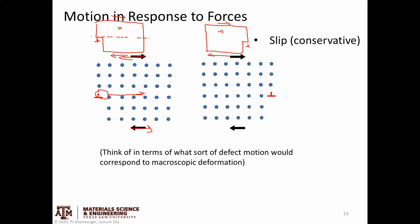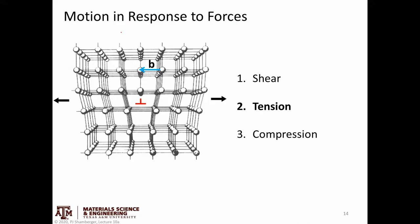Similarly, if instead of the extra half plane pointing up, you had it pointing down — how would that change the motion? You can always think it through by considering what would happen to the macroscopic volume under that shear stress.